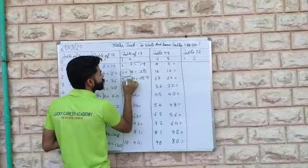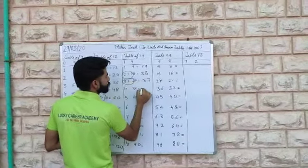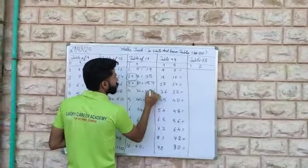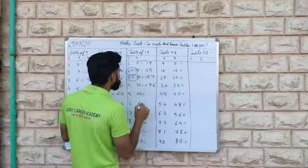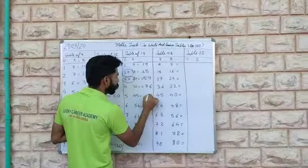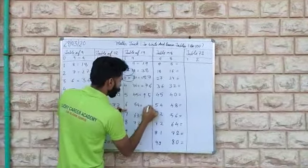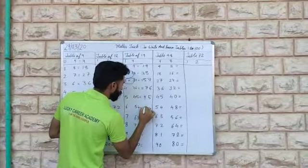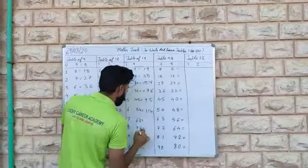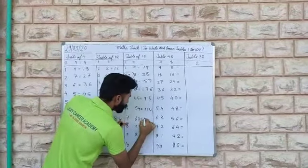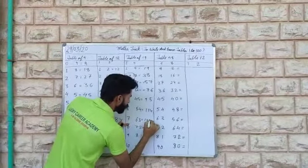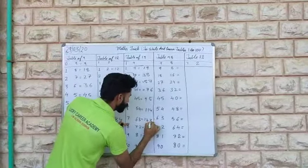If you add this 2, the same it will be 6, it will be 7. Then 5, it will be 9. Then 4, it will be 11. Here 13.